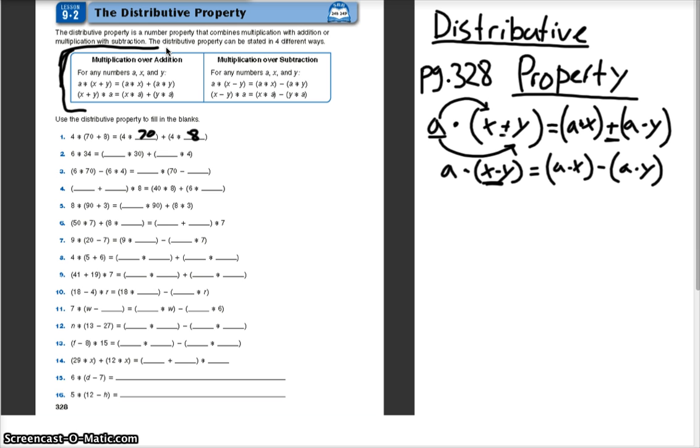So for example, if I were going to write 5 times 2 minus 8, what that really means is 5 times 2 minus 5 times 8. That's how we've really solved the problem.